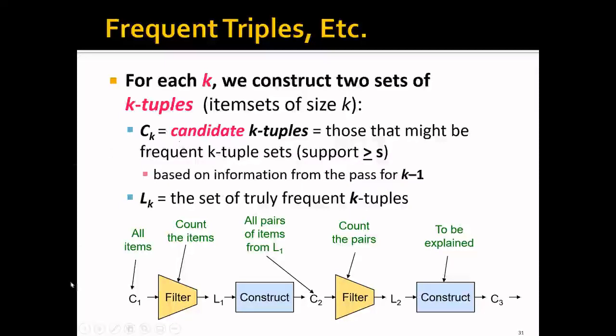And the second set we need to maintain is L_K, which is the set of truly frequent K tuples. So at a high level, the whole process goes like this. We start from a list of all items, which is C_1. And these are individual items. And we will count the items and we will prune it and keep only the frequent items, which is L_1. And from L_1, we will construct all pairs of frequent items. And this is C_2. And among the C_2, we will count all these candidate pairs and we will prune the non-frequent ones and keep only the frequent pairs. And that is L_2.